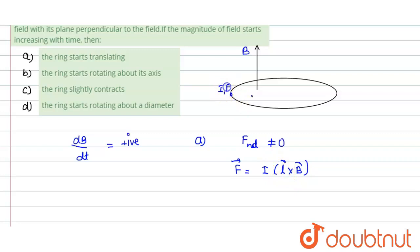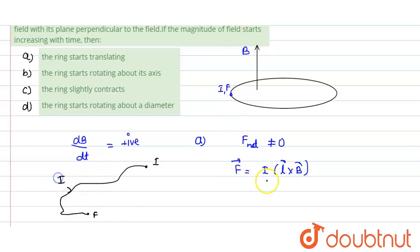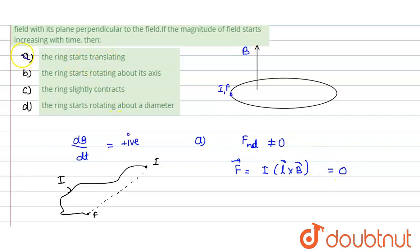For a closed loop, the initial and final points are the same, so the net displacement vector L equals zero. For any arbitrary shaped wire, the force equals I times the vector from initial to final point cross B. Since this is a circular loop, the initial and final point are the same, so L = 0, meaning F = 0. Therefore the ring is not translating — option A is wrong.